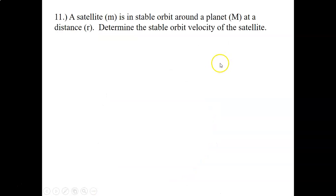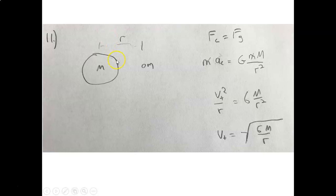So what we want to do is figure out the stable orbit velocity of a satellite m, little m, that's in stable orbit around a planet, a central mass, big M, at a distance r from the center of the central mass, and what would be the tangential velocity, the orbit velocity. So here's our central mass, big M. Here's our satellite, little m, and here's our distance r from the center of the planet, R.